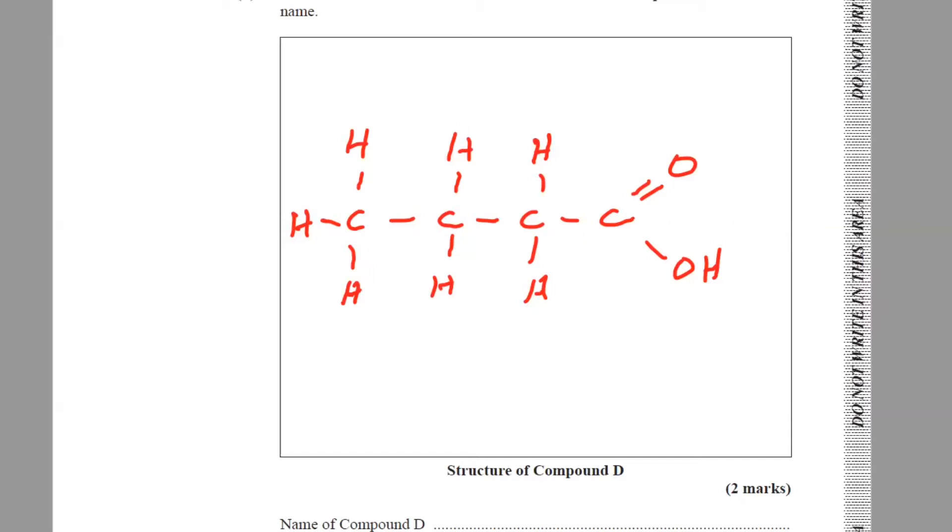So that's what compound D would look like, that's the structural formula. And the name of compound D would be butanoic acid. But for four, four carbons. The carbon that's a part of the functional group is counted as well in the name.